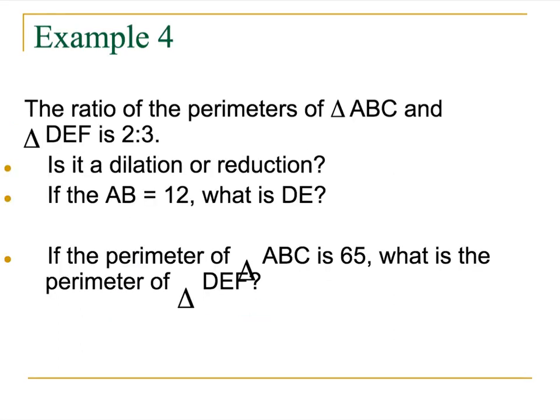Our last problem of this lovely video. The ratio of the perimeters of ABC and DEF is two to three. And we know that if the ratios are two to three, our sides are also in that same ratio. We just discussed that. So, is that a dilation or a reduction? In this case, since we're going from two to three, we're going from small to big, it is a dilation.